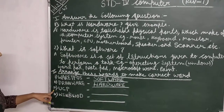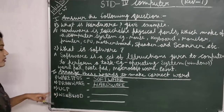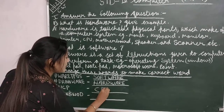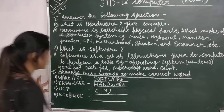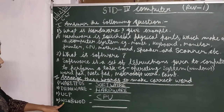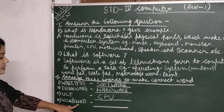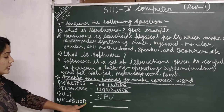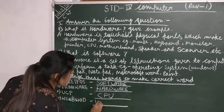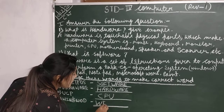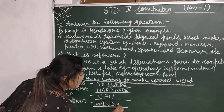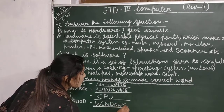Third number is u-c-p. It will be C-P-U. Fourth number is w-i-n-s-w-o-d. It will be Windows. W-i-n-d-o-w-s.